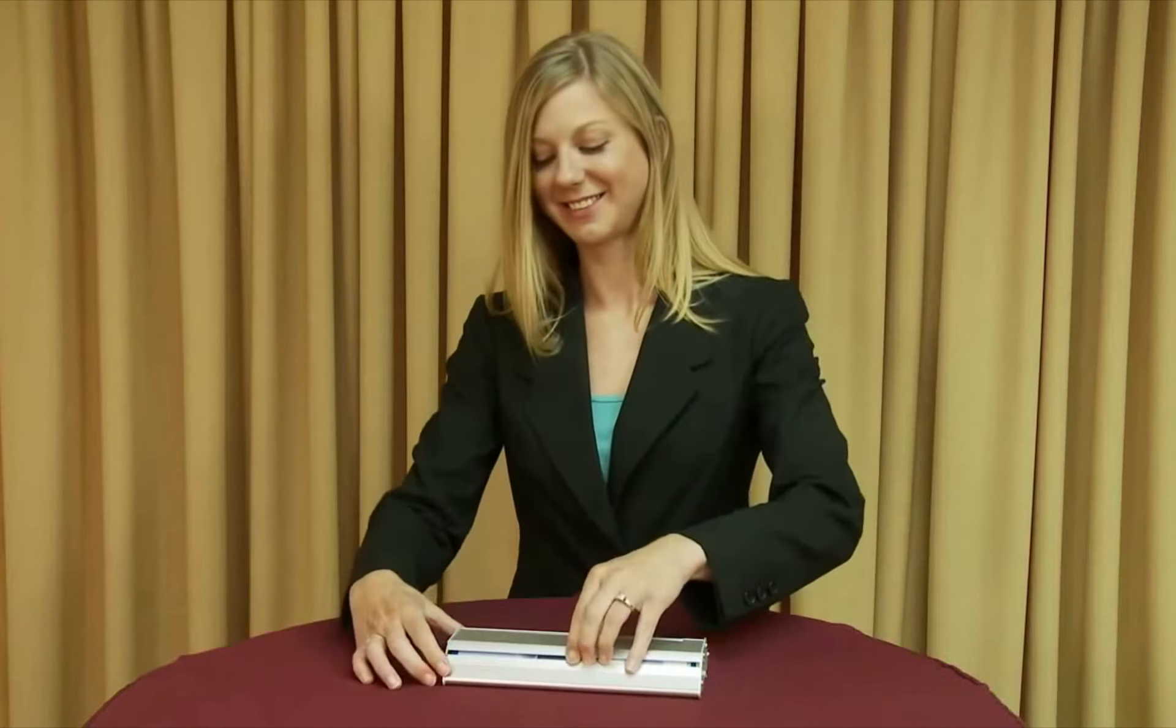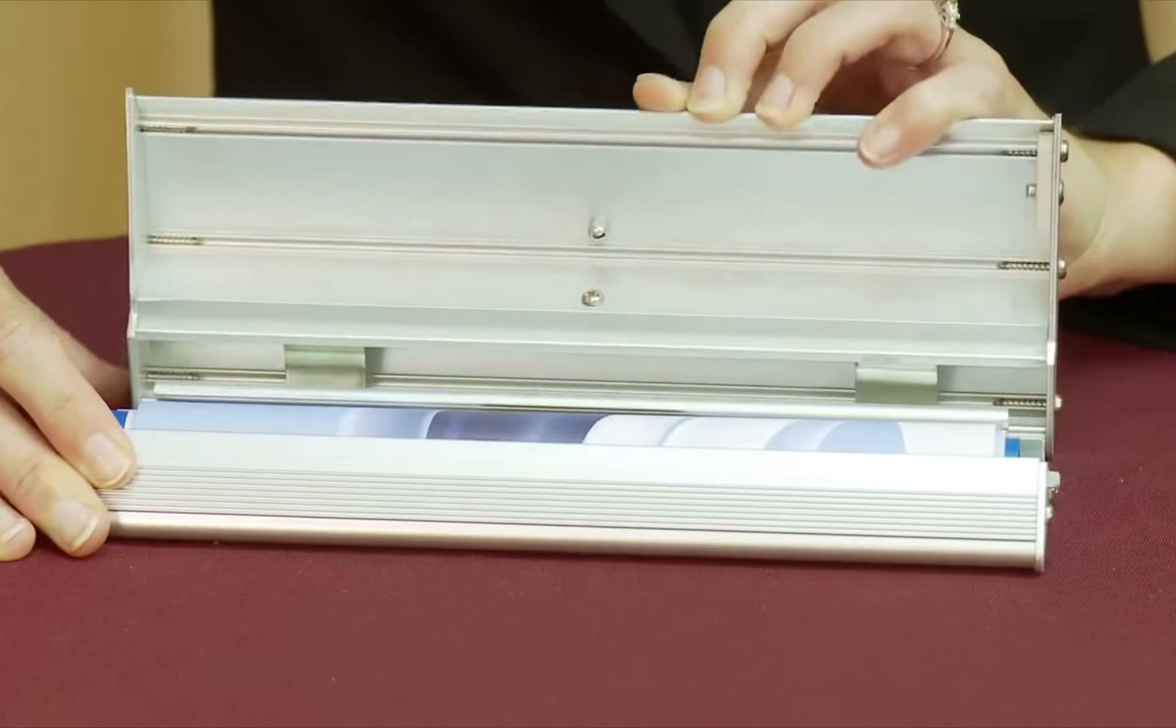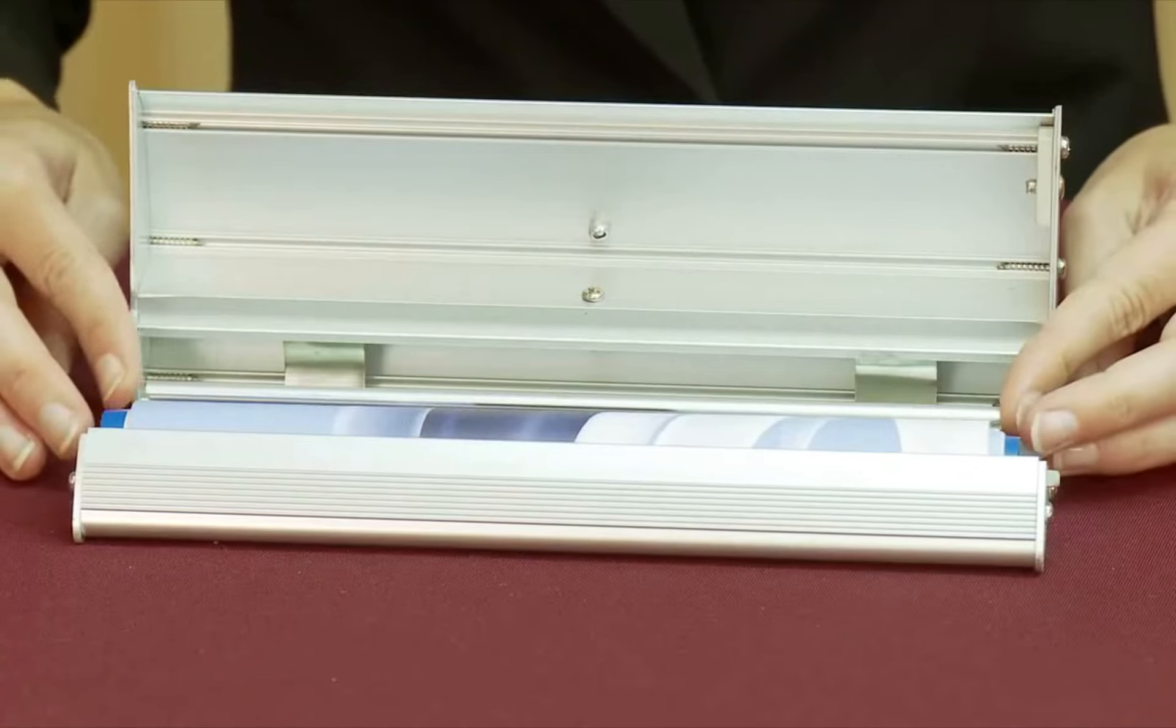To display your graphic, open the lid of the base unit. Extend the banner rail forward and close the base lid.